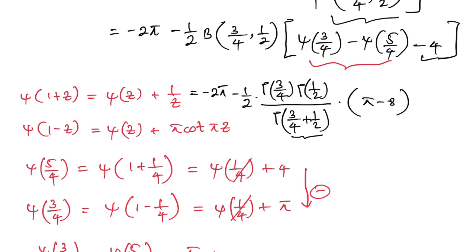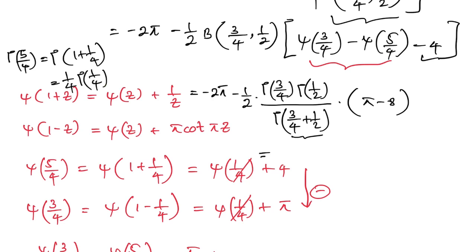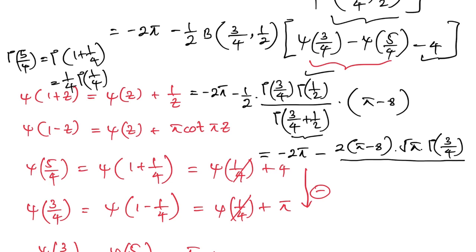After simplification, noting that Γ(3/4 + 1/2) = Γ(5/4) = (1/4)·Γ(1/4) and factors of 1/4 and 1/2 cancel, the final answer is I = -2π·(π−8)·√π·Γ(3/4) / Γ(1/4). This is the closed-form answer for the integral of arcsin(x)·ln(x)/√x from 0 to 1.